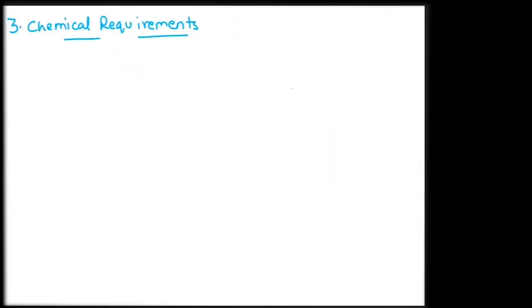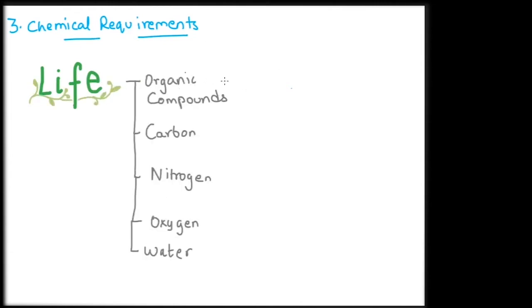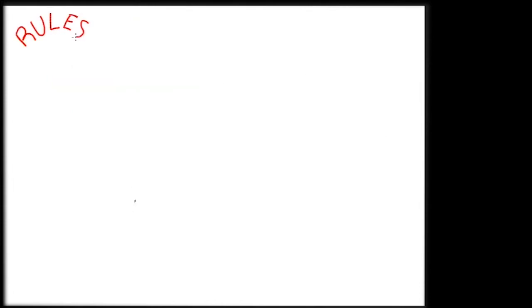Atmosphere does not only provide oxygen but also maintains a pressure for water to stay liquid and not escape. Chemically, our exoplanet should also have important life-supporting substances like carbon, nitrogen, oxygen, water and organic compounds in the right amount. But these rules are quite bendable.